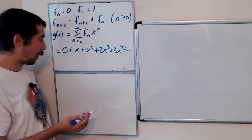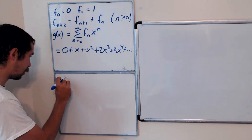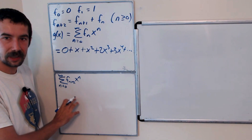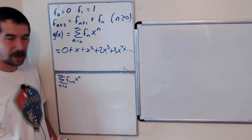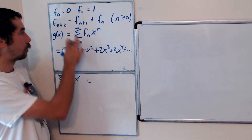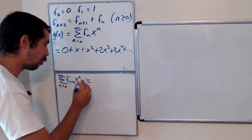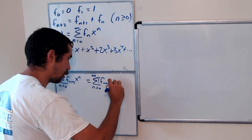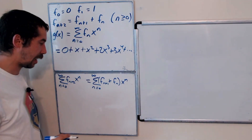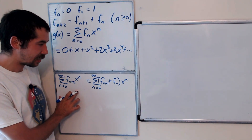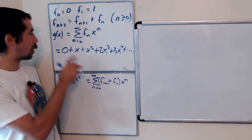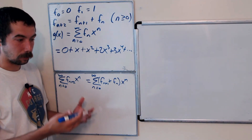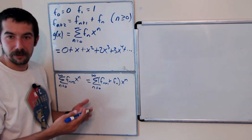Let's consider the power series which is the sum from n equals 0 to infinity of f_(n+2) times x to the n. This is a slightly different power series than the generating function for the Fibonacci numbers. Using the recursion, we know this equals the sum from n equals 0 to infinity of f_(n+1) plus f_n times x to the n. Our goal is to express both sides in terms of g of x, and use that to get a formula for f_n.